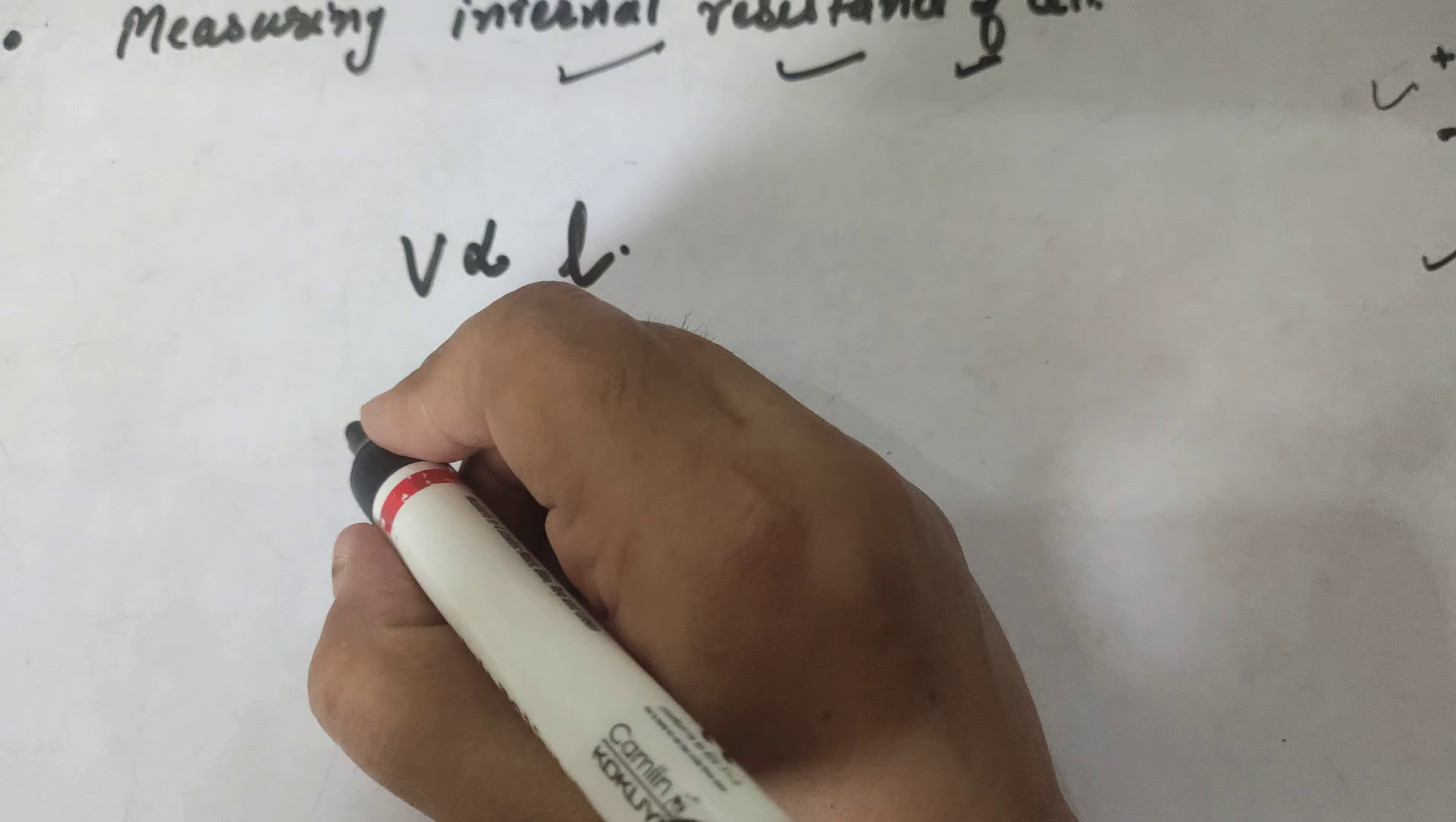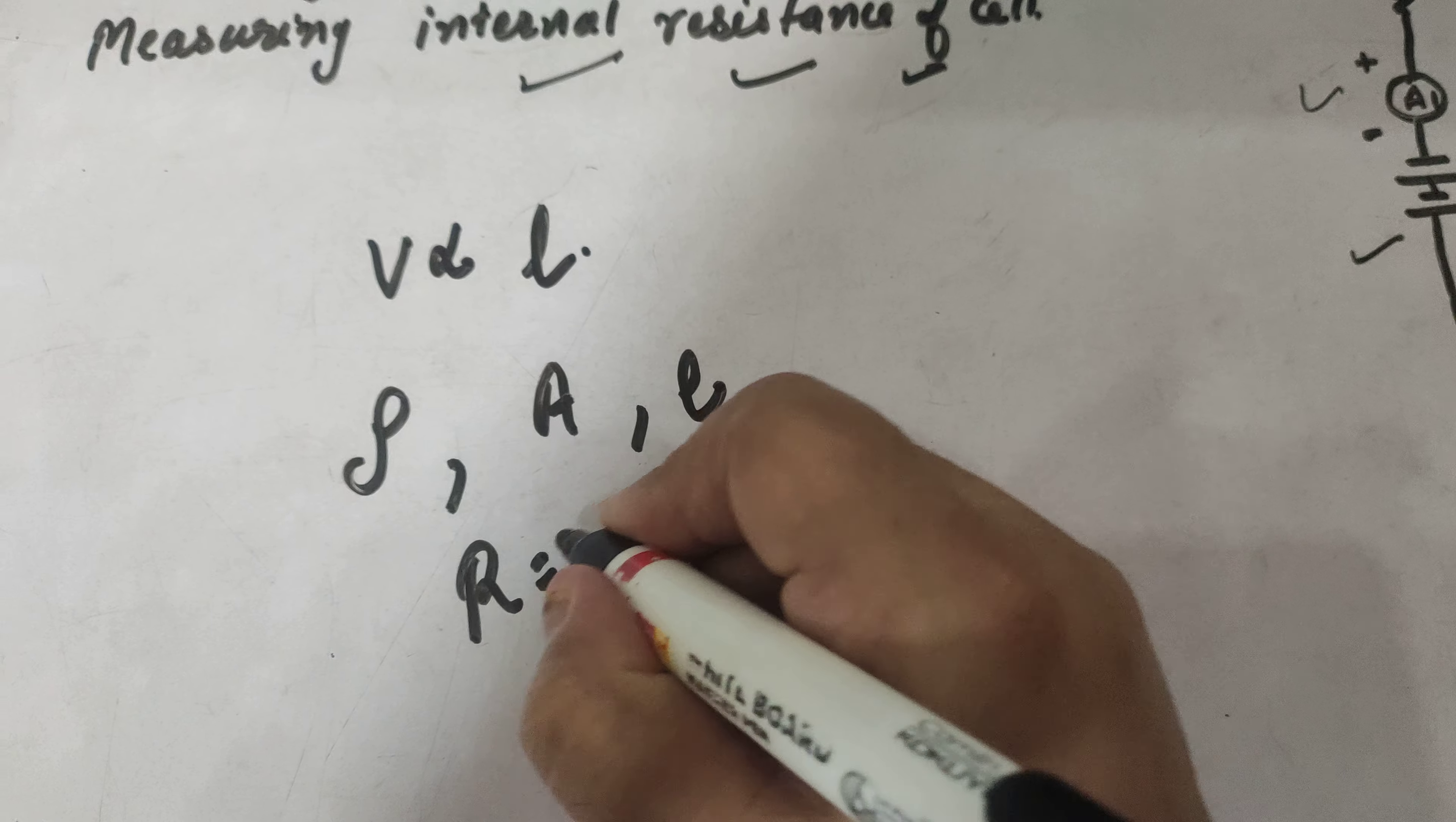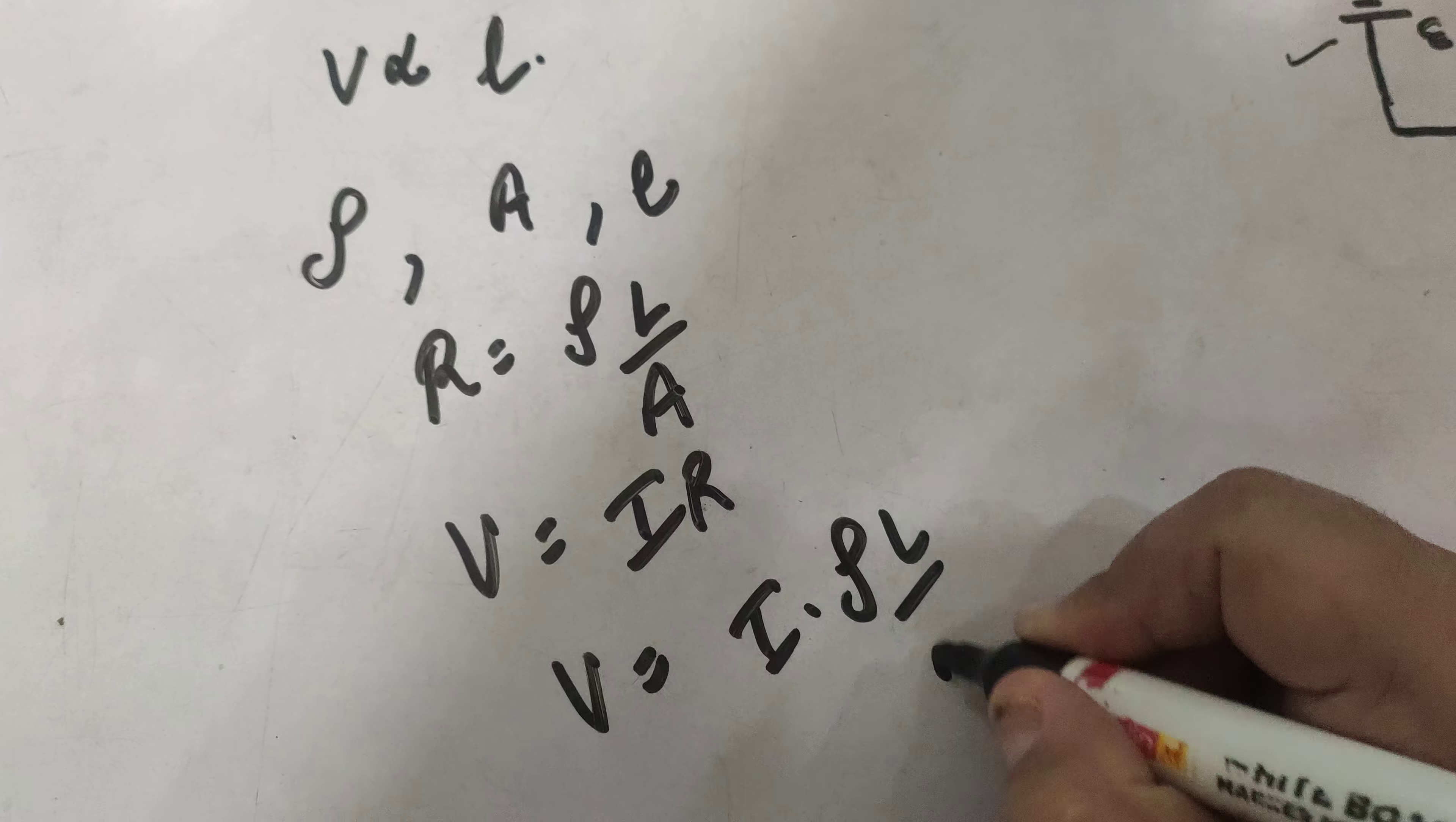Let us consider a wire having resistivity rho, uniform area of cross section A, and length L. In that case, R is equal to rho L upon A, and also V is equal to IR. So putting this value, V is equal to I into rho L upon A.